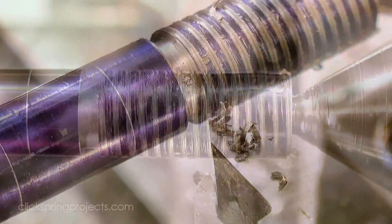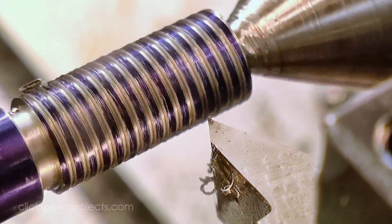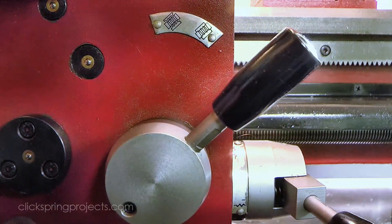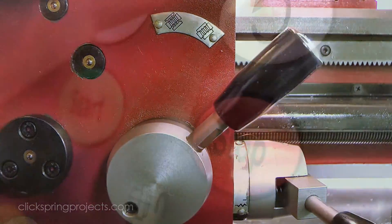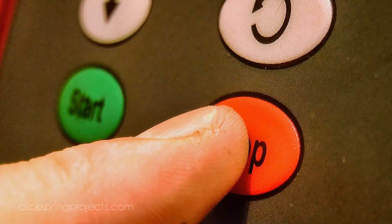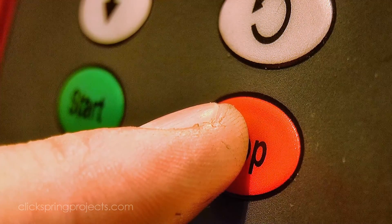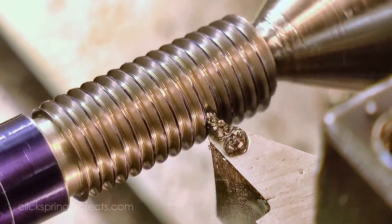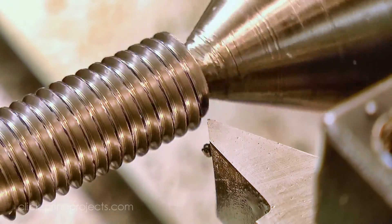And I should point out that this particular lathe has no threading dial, so unlike those lathe that do have a threading dial, it's essential that the split nut is kept engaged with the lead screw at all times. And I'm keeping my finger positioned right on the stop button, to be sure to catch the tool as it passes into the relief groove at the end of each pass. It's surprisingly easy to let the tool run on too far, and spoil the work.